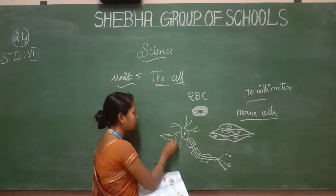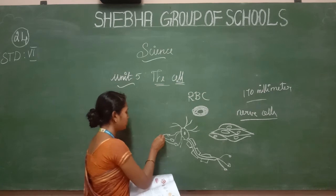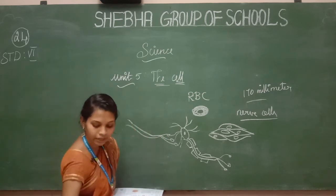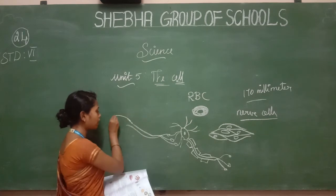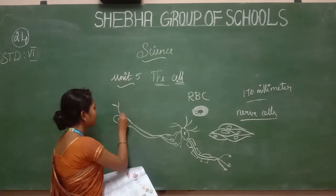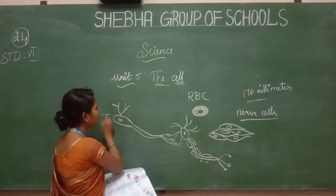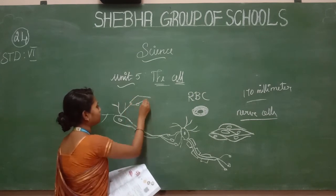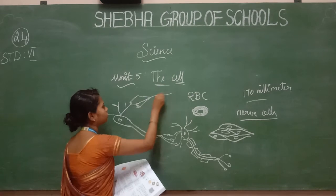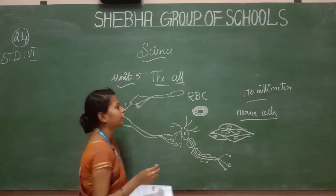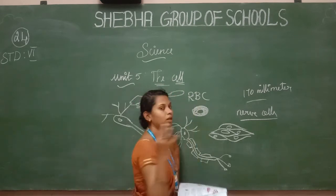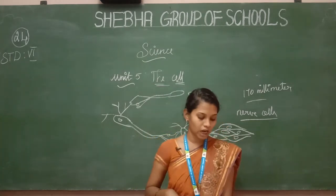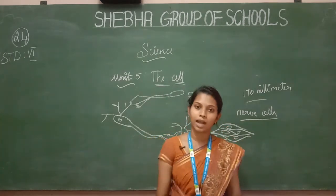We know the inner side of the cell; cells are connected and we can observe the other side of the cell as well. Next, we go ahead to plant cells and animal cells.